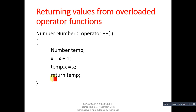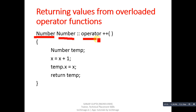If you want to return an object from an overloaded function, the return type will be the class name — in this case 'number'. The function is defined outside the class using the scope resolution operator. A temporary object 'temp' is created, the value of X is incremented and assigned into temp.x, then temp is returned. Since the return type is 'number', we can easily return temp to the main function.